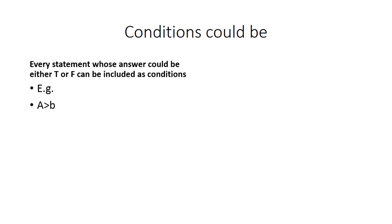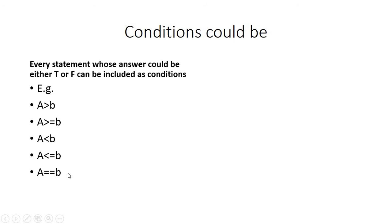For example: a > b, a >= b, a < b, a <= b, a == b. Remember in R you cannot use a single equals sign for testing equality of two numbers. You will have to use double equals (==). For example if a is 5 and b is 5, then a == b gives true. If a is 5 and b is 6 then this statement gives false.